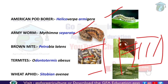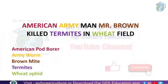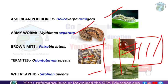Let me tell you all this like a story. Our statement is 'American army man Mr. Brown killed termites in wheat field.' From American we can remember American Pod Borer. American Pod Borer's scientific name is Helicoverpa armigera. American army sent Mr. Brown as the head along with the soldiers. Army Worm is Helicoverpa - wait, American Pod Borer is Helicoverpa armigera, and it is called Army Worm.